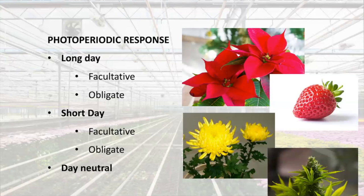Short day plants are promoted by shorter photoperiods, usually below 14 or 12 hours per period. Many plants with high volume horticulture and floriculture can have a short day response. Some examples are different cultivars of Poinsettia, Strawberry, Cannabis, and Chrysanthemum.